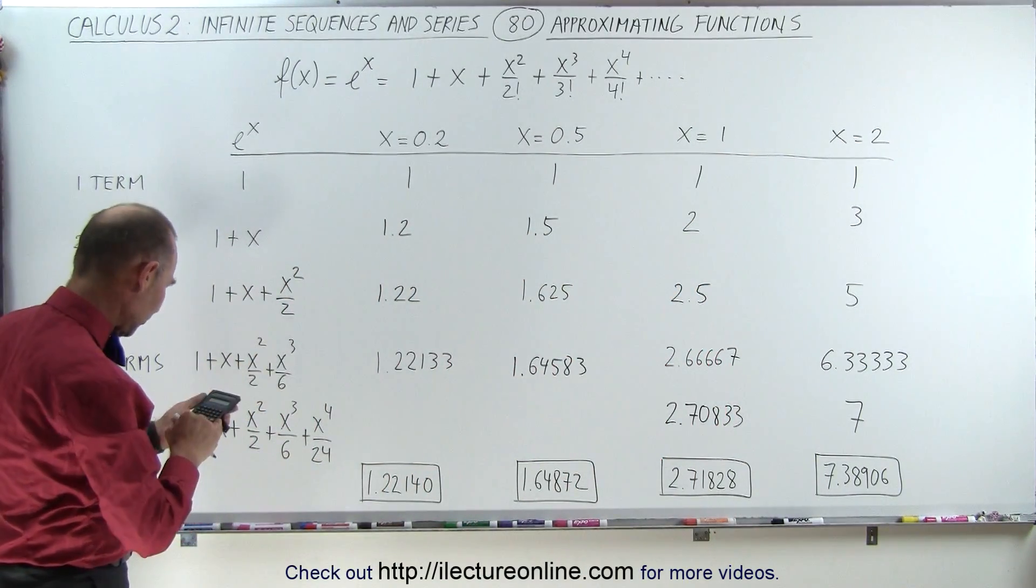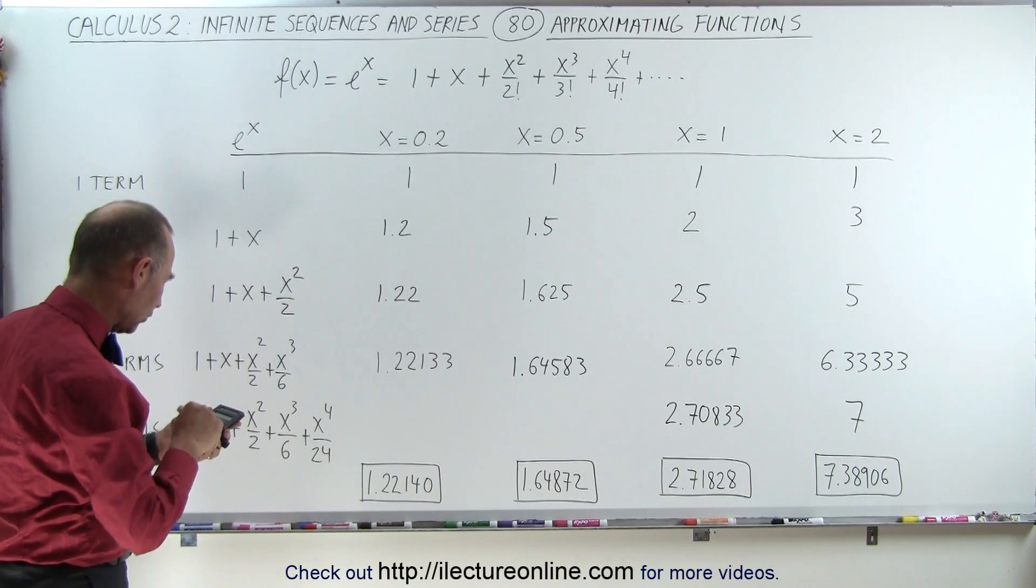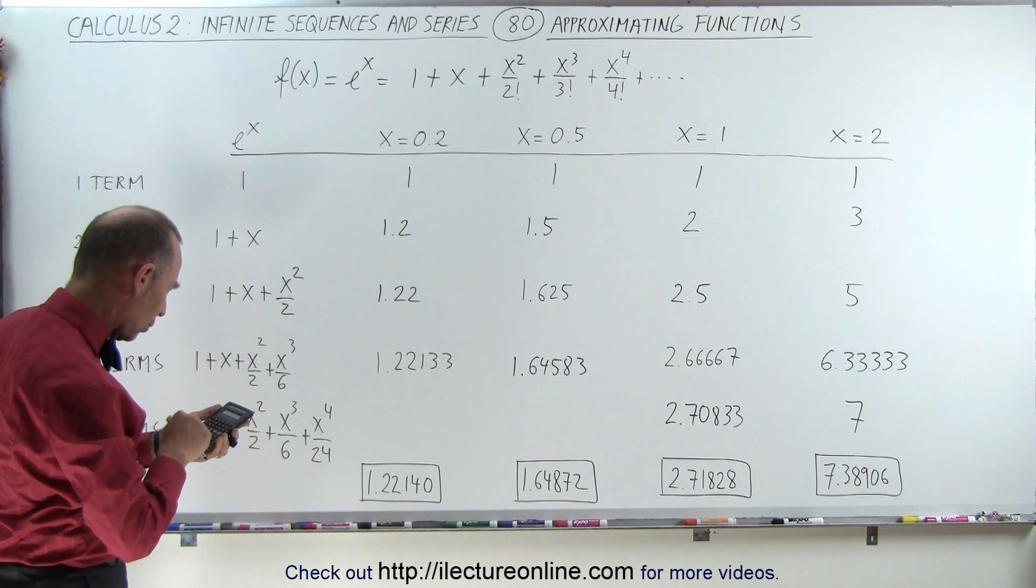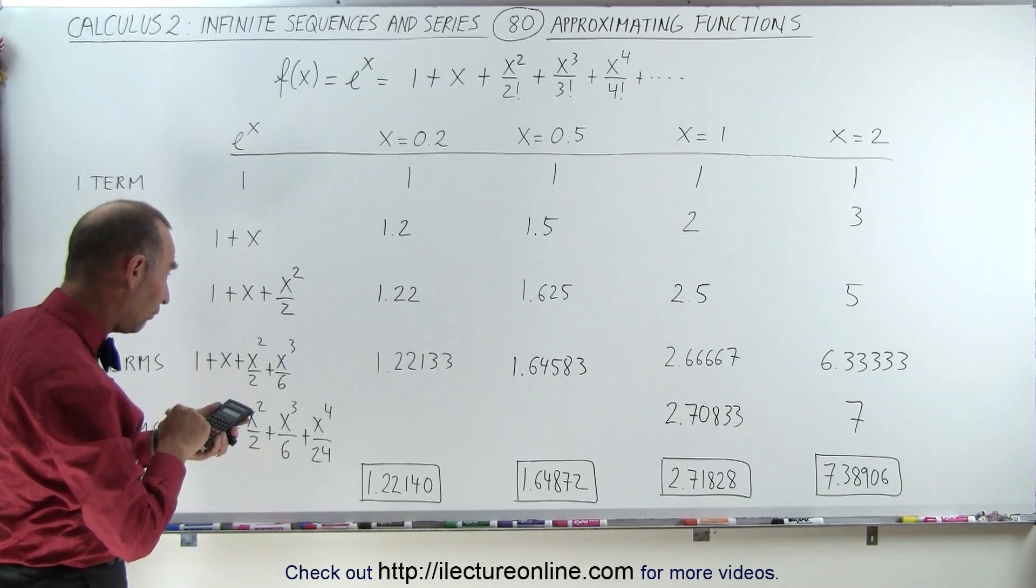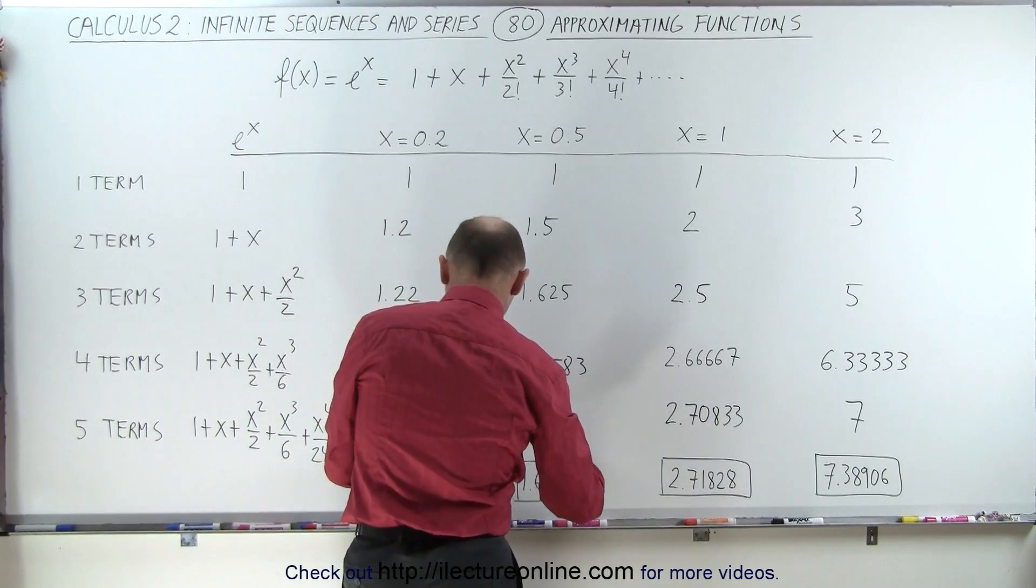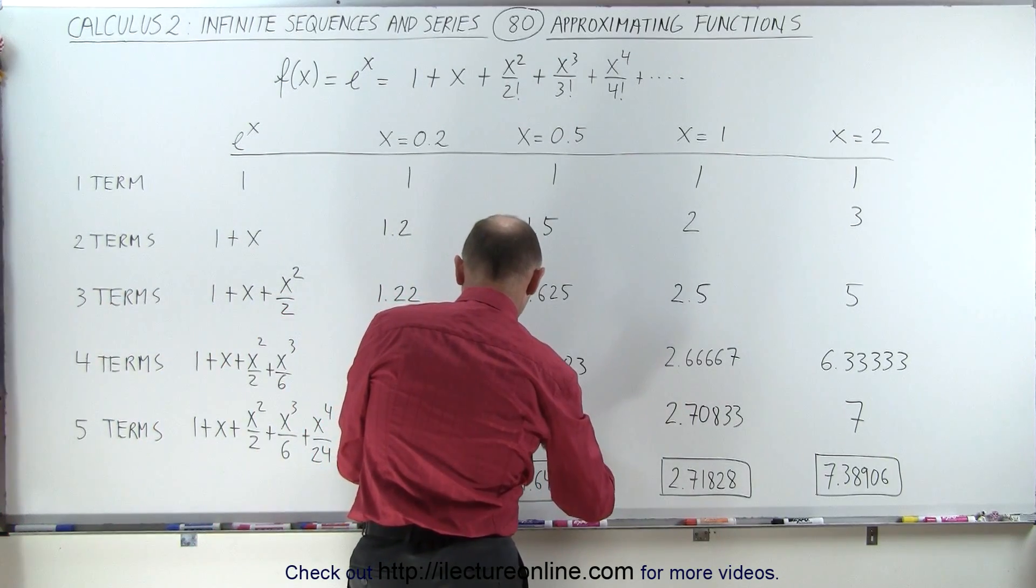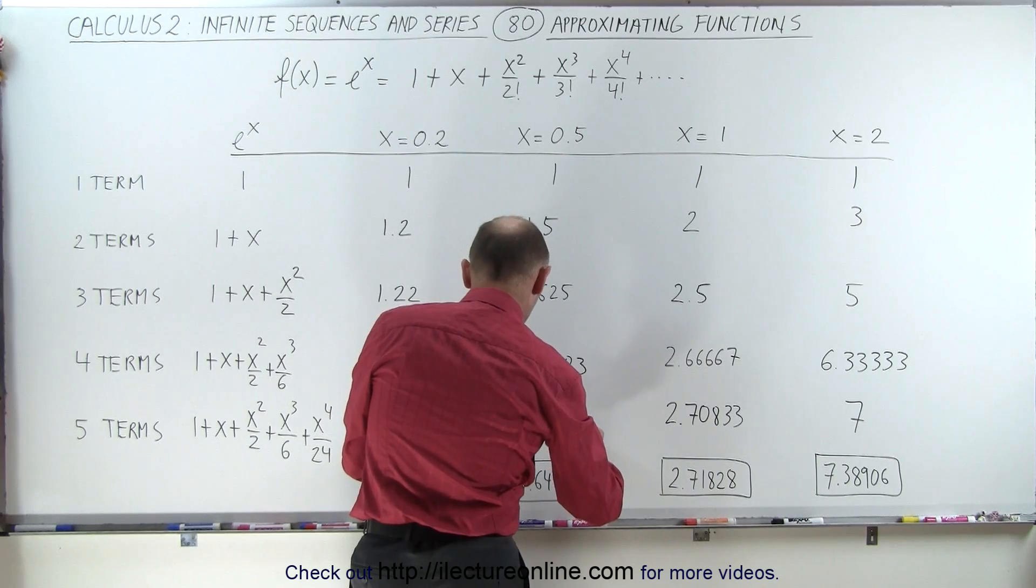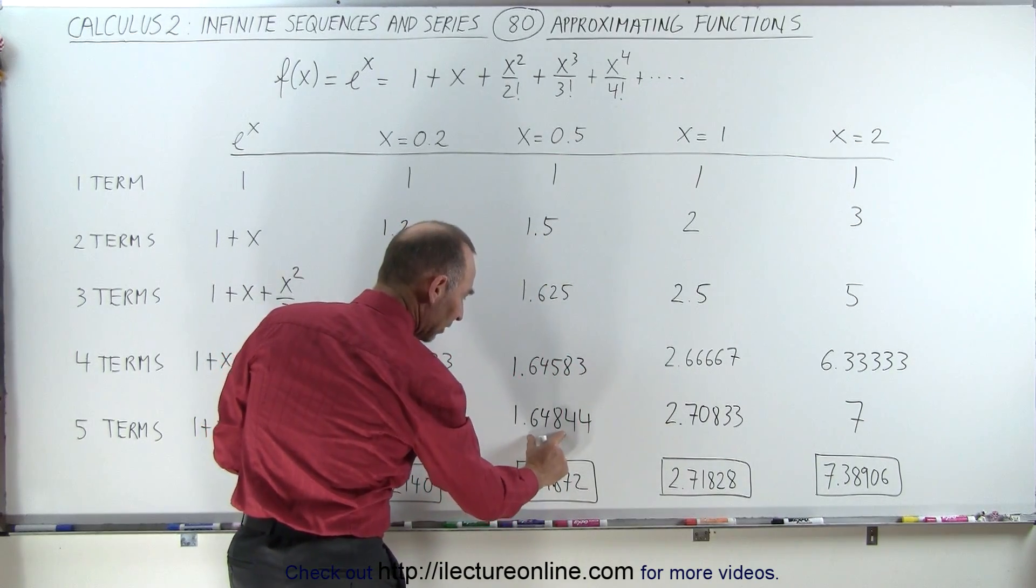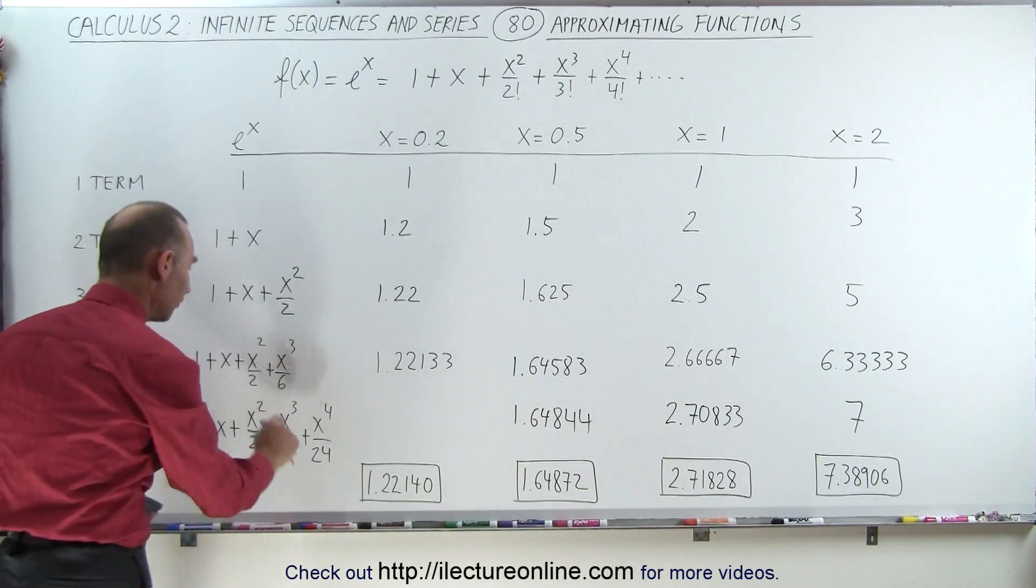And over here, we add 0.5 to the fourth power, divide it by 24, and add that to 1.645833, we end up at 1.64844. Notice we have the first three decimal places after only using five terms.